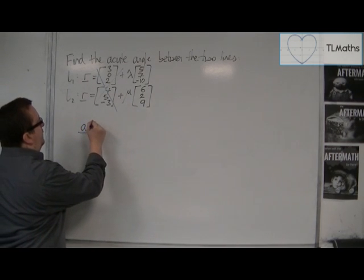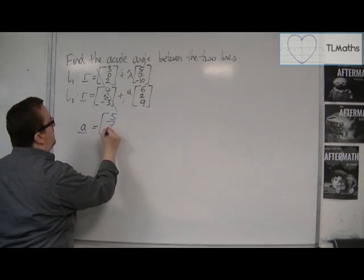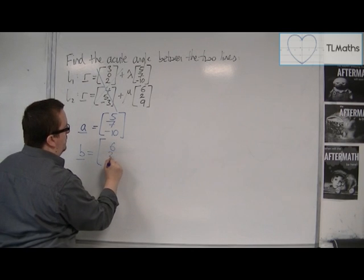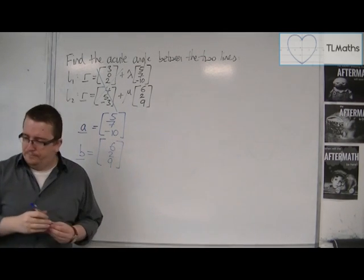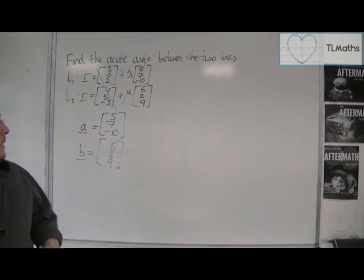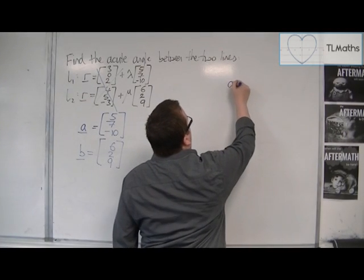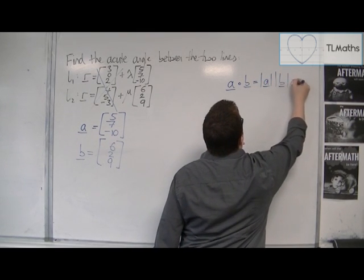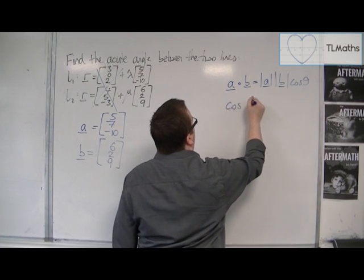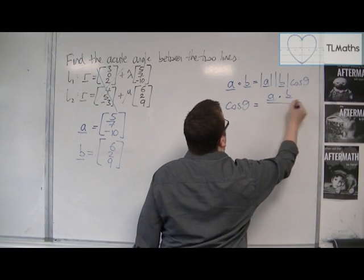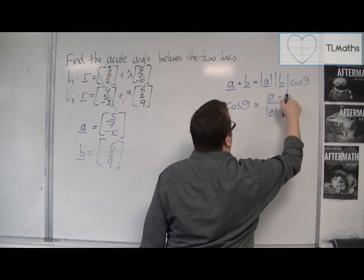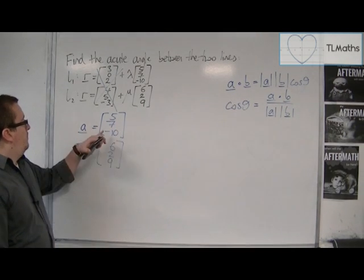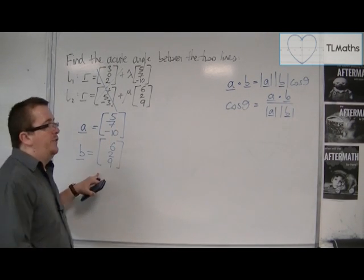So what we have is a first vector of (5, 7, −10) and a second vector of (6, 2, 9). We need the scalar product formula: a · b = |a| |b| cos θ, which I'm going to rearrange to get cos θ = (a · b) / (|a| |b|). So here's my a and my b — I need to find a · b and I need to find |a| and |b|.